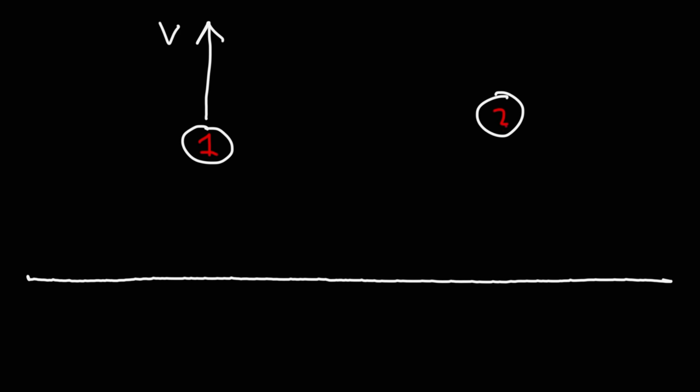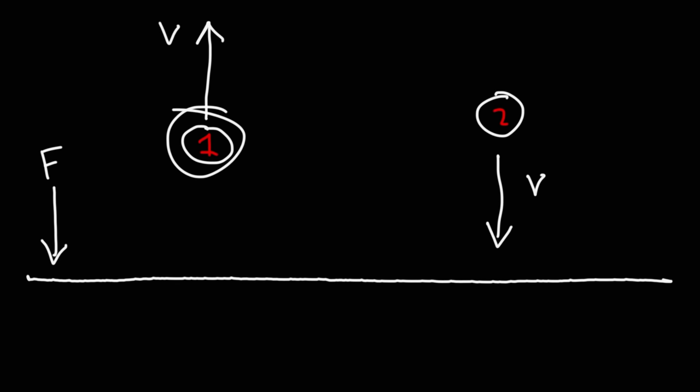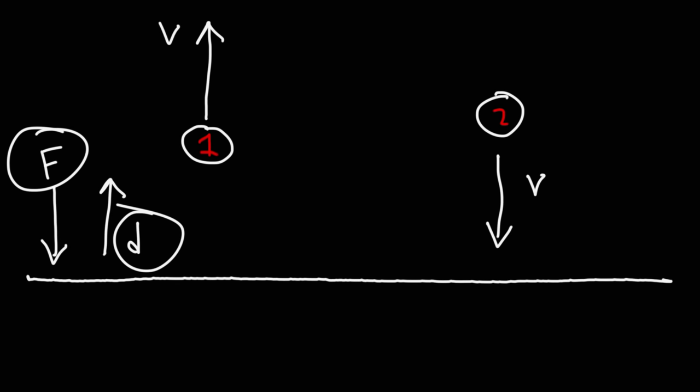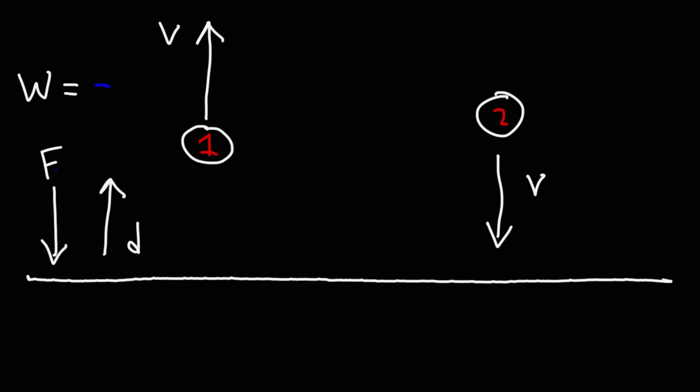Consider two situations: ball one is thrown upward, and ball two is falling down under gravity. For ball one moving upward, the force of gravity is downward (negative y direction) while the displacement vector points upward — they're in opposite directions, so gravity does negative work on the ball while it's going up. For ball two falling down, both the gravitational force and the displacement are in the negative y direction. Multiplying two negative values gives a positive answer, so the work done by gravity on a falling object is positive.